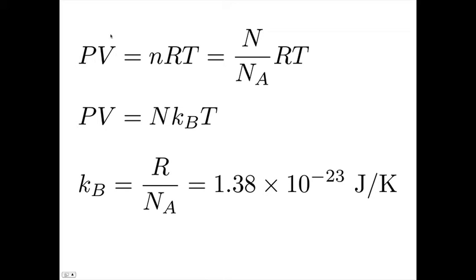So we can write this ideal gas law, replacing the R over NA with kB, as PV is equal to NkBT. The capital N means the number of molecules. The little n means the number of moles. So this form is more useful when we only have a small number of molecules. Either form should give you the correct answer.